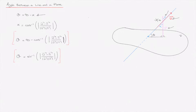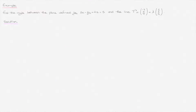Now let's see how we use this formula with an example. We're asked to find the angle between the plane defined by 3x minus 2y plus 4z equals 5, and the line defined by r equals the position vector (-3, 5, 7) plus lambda, the parameter, times the direction vector (2, 2, 4).